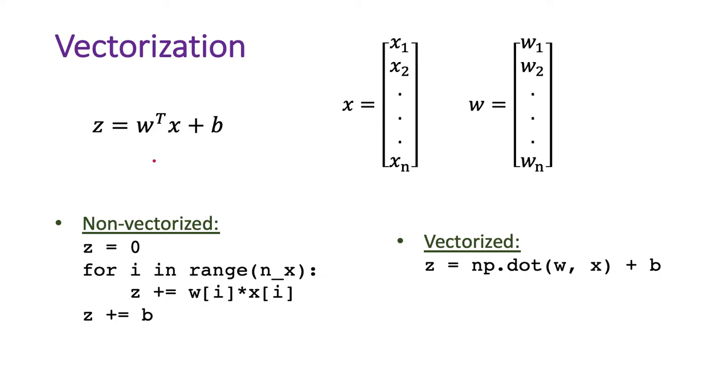From logistic regression, the value of z is calculated as w transpose x plus b, where w is an n-dimensional vector denoting the weights for n features, and x is also an n-dimensional vector representing the list of features.